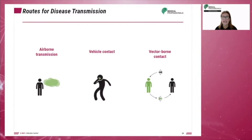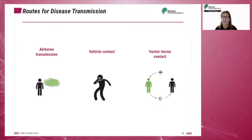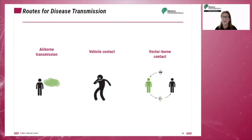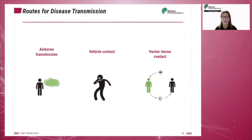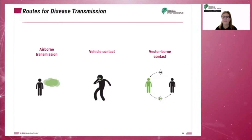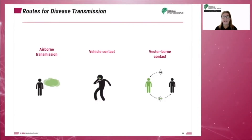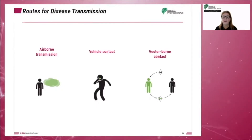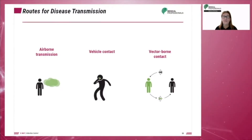Transmission by vehicle means that the contaminated item — typically a liquid such as water, drugs, solutions, blood, equipment, or improperly prepared food — carries the infection into the host's body. An example of vehicle or vehicular transmission is the transmission of the salmonella bacteria from infected food to an individual. In this case, the food is the vehicle.